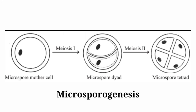This diagram shows microsporogenesis, which gives rise to microspore tetrad. Here in the diagram we can see the microspore mother cell undergoing meiosis I and giving rise to microspore dyad. After the formation of the microspore dyad, it again undergoes meiosis II and gives rise to the microspore tetrad, where we get 4 microspores. Now let's discuss about its structure.